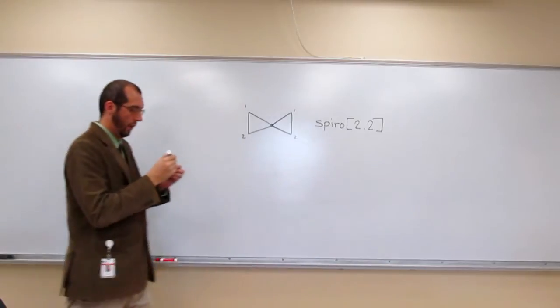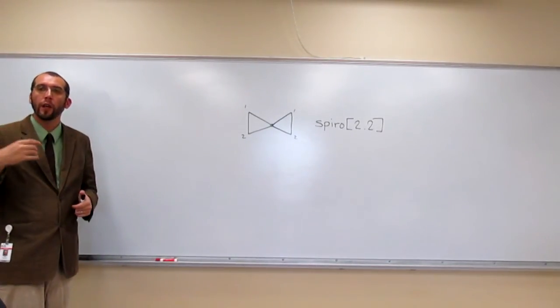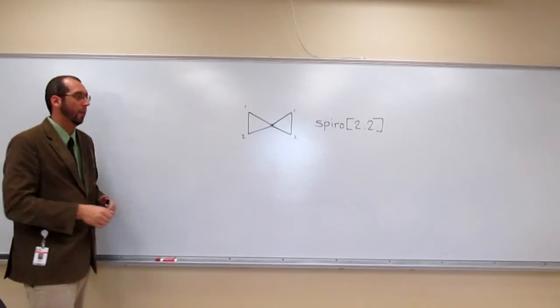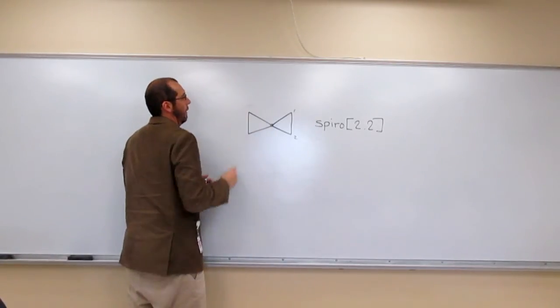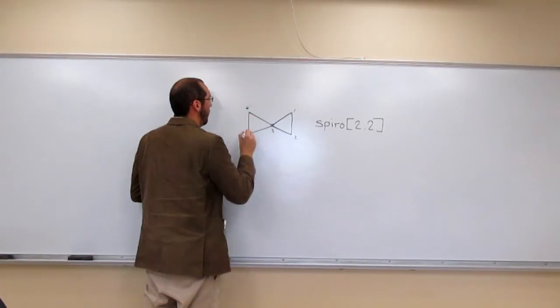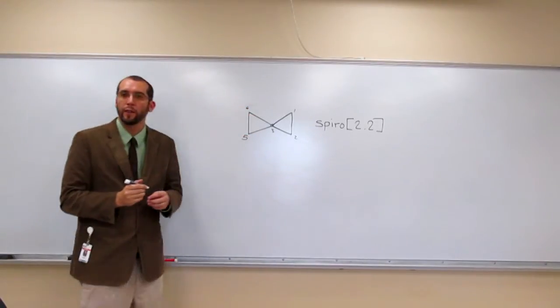And then for the end, just like the bicycles, we add up all the carbons. Right, so one, two, three, four, five. So what's the end of this? Pentane.